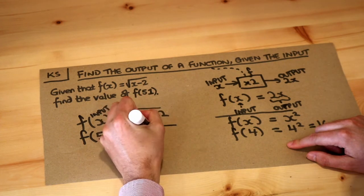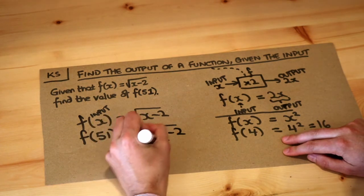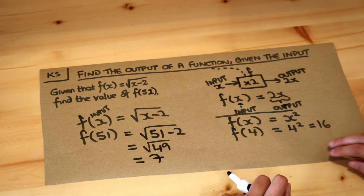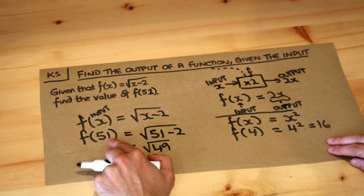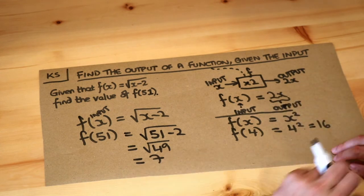So we do the square root of 51 minus 2. Now 51 minus 2 is 49, and the square root of 49 is 7. So when the input of your function is 51, the output of your function, what's spit out of your function, will be 7.